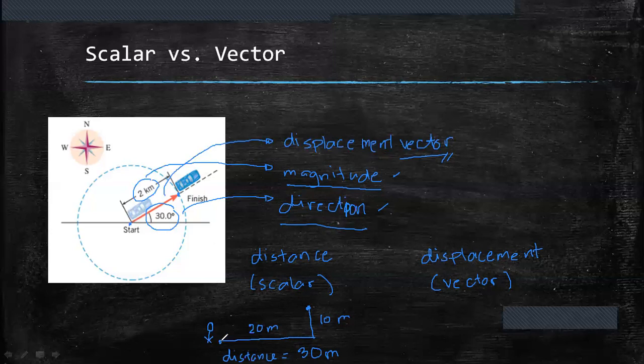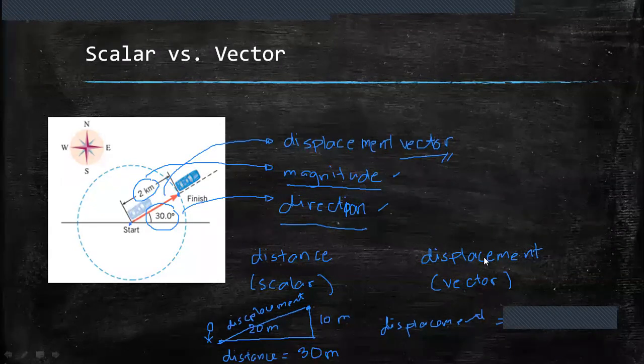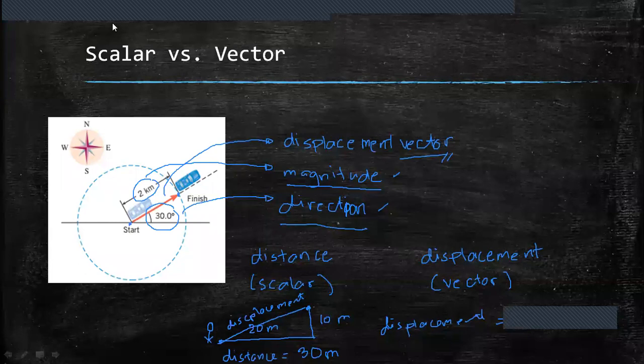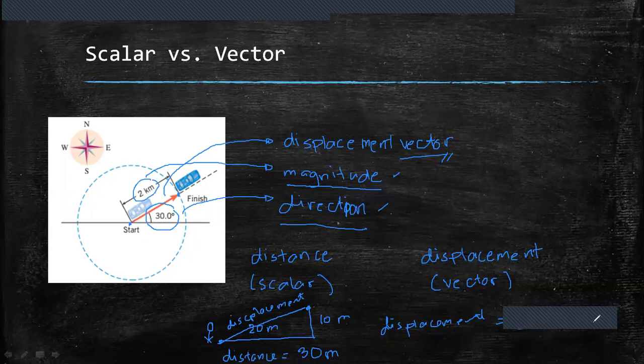His displacement is this one. Displacement. And using Pythagorean Theorem, we can say that the displacement of Mario is 22.36 meters.